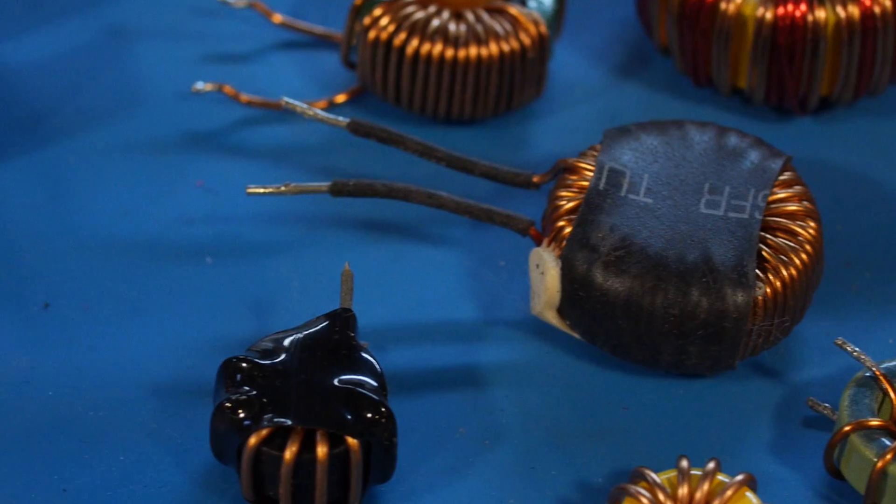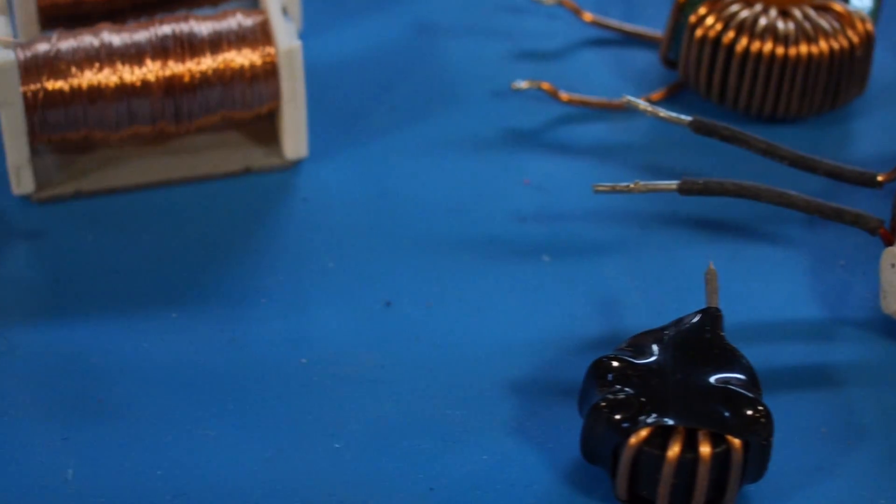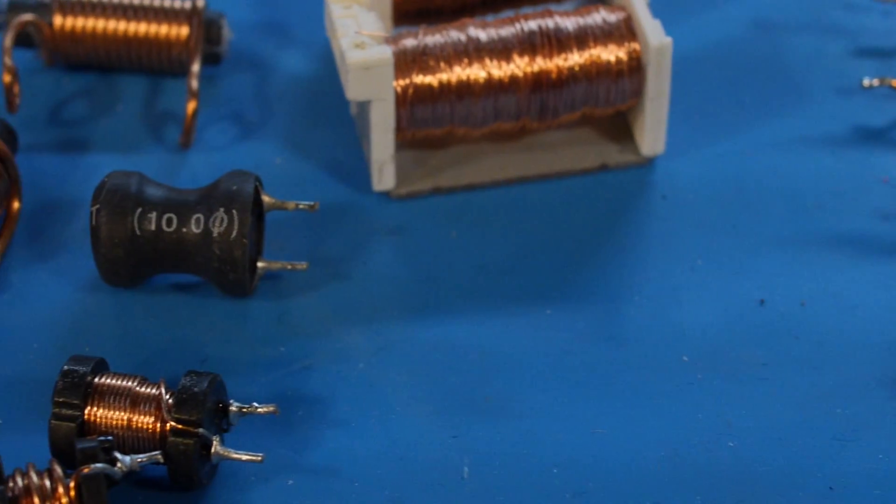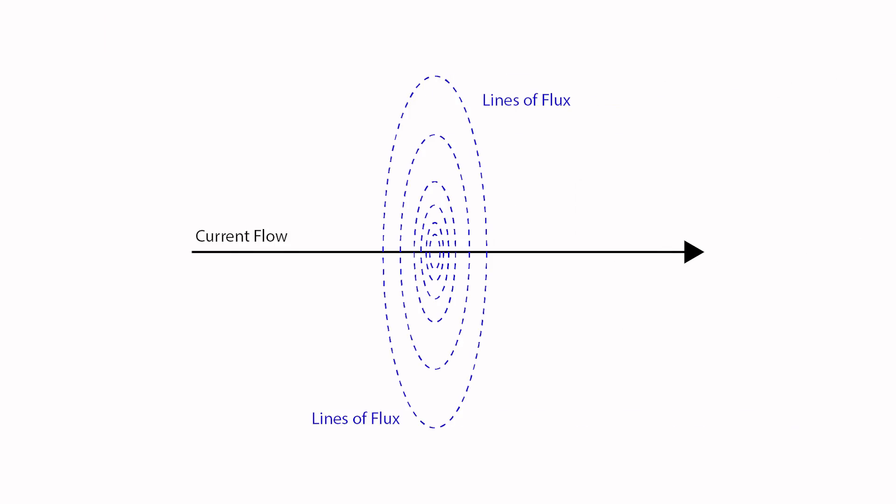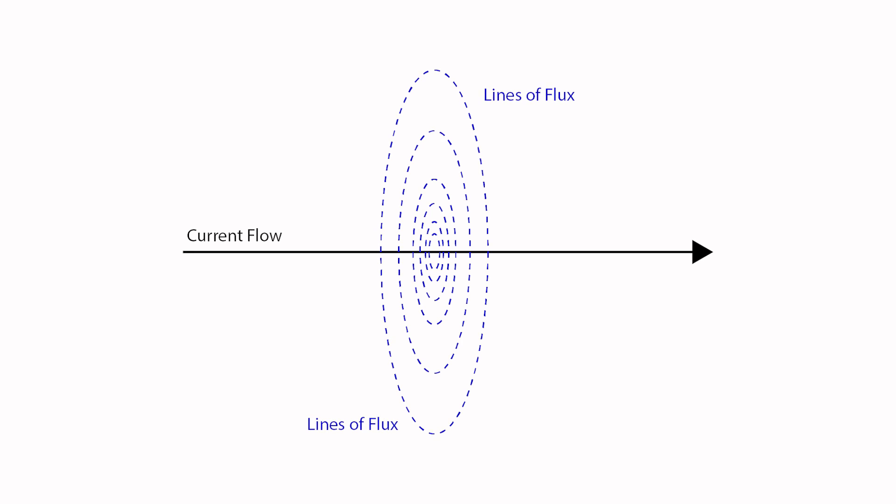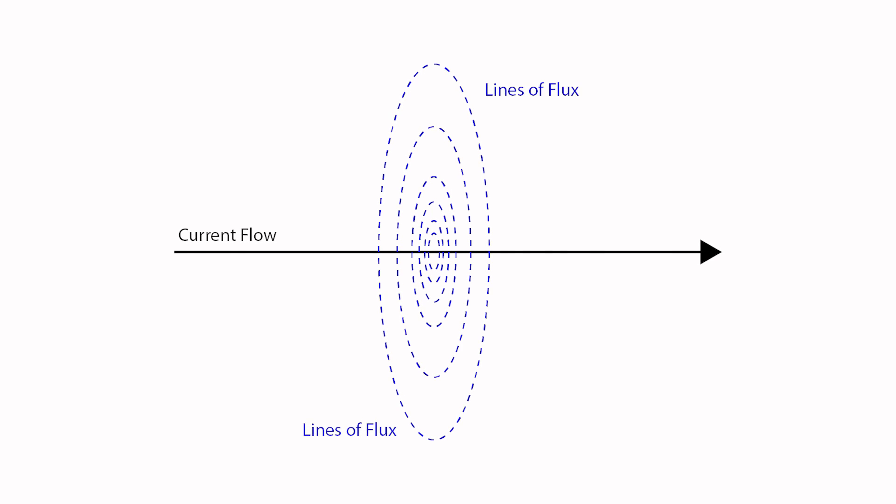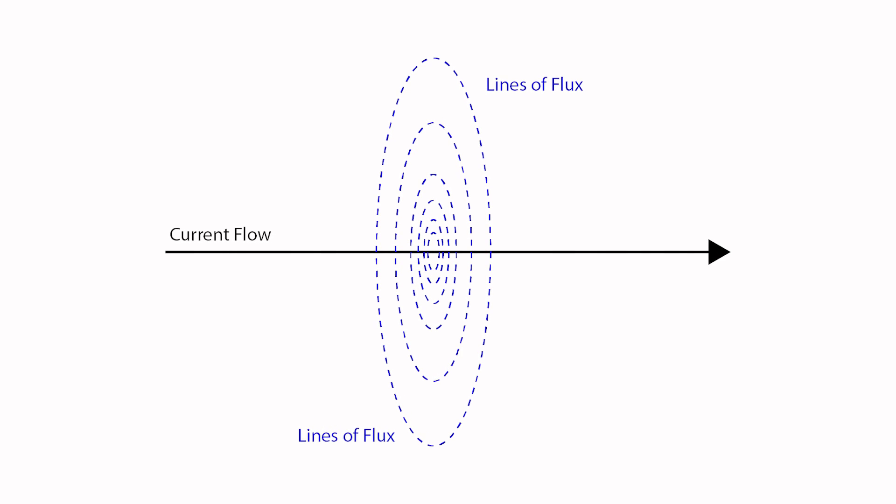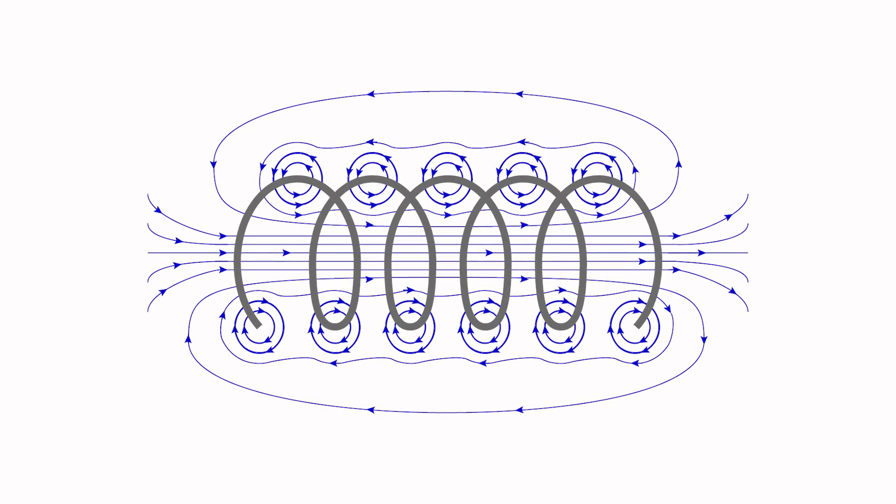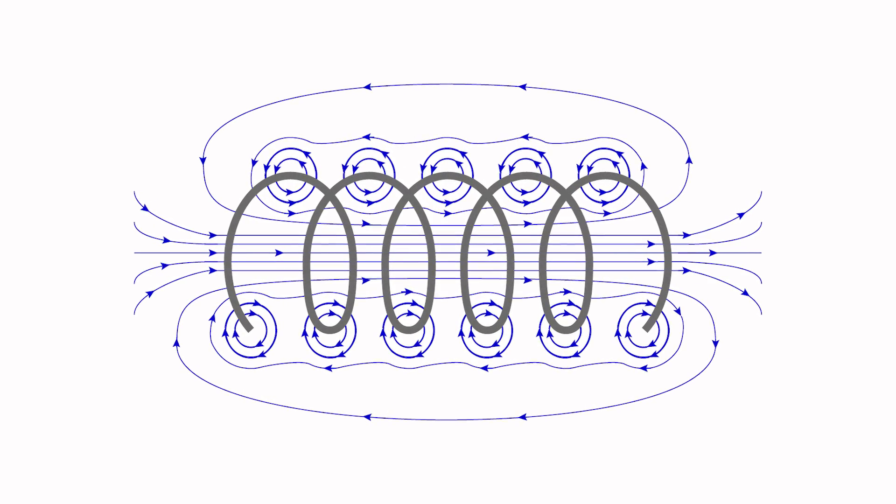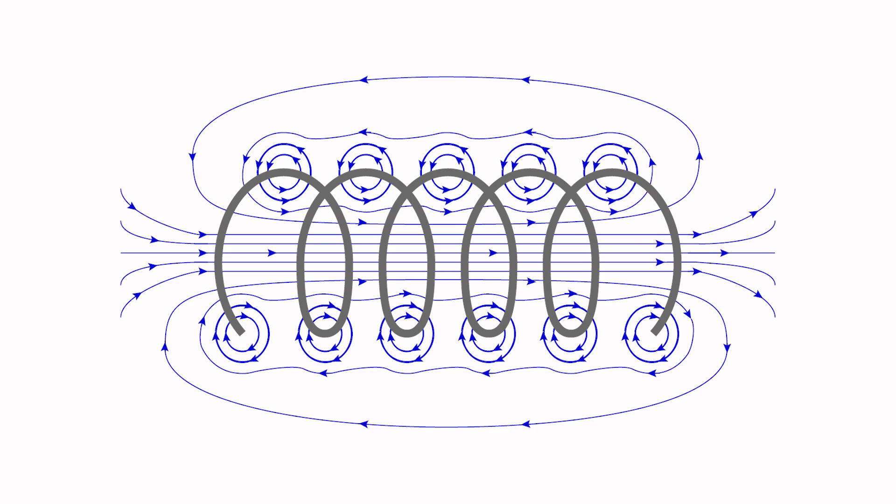An inductor is a coil of wire designed to take advantage of the relationship between magnetism and electricity. Previously, we learned how electricity interacts with a coil of wire to create a magnetic field. When a voltage is applied across a wire, the movement of the current through the wire generates magnetic lines of flux. When that wire is wrapped into a coil, the flux of each turn adds together to form a magnetic field.